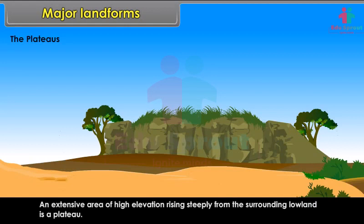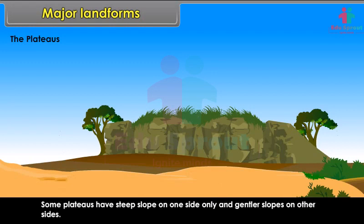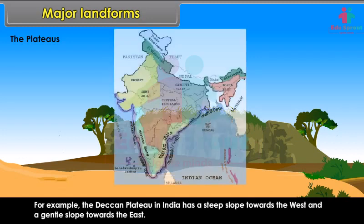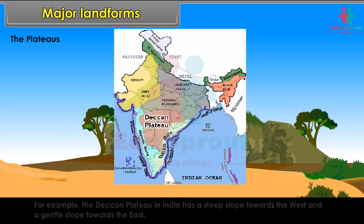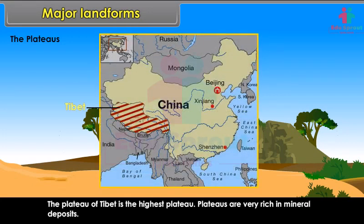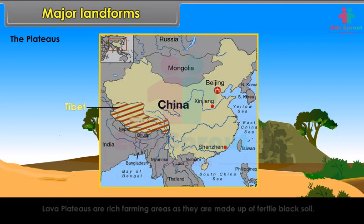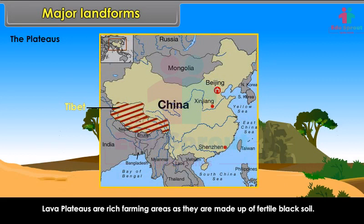An extensive area of high elevation rising steeply from the surrounding lowland is a plateau. Some plateaus have steep slopes on one side only and gentler slopes on other sides. For example, the Deccan Plateau in India has a steep slope towards the west and a gentle slope towards the east. The plateau of Tibet is the highest plateau. Plateaus are very rich in mineral deposits, and lava plateaus are rich farming areas as they are made up of fertile black soil.